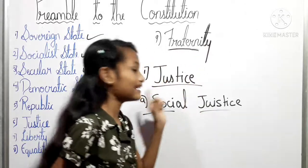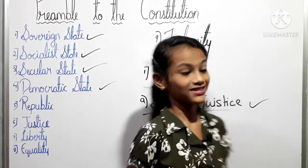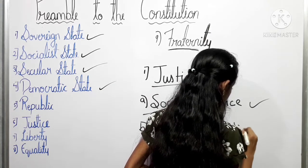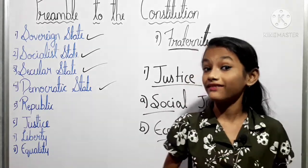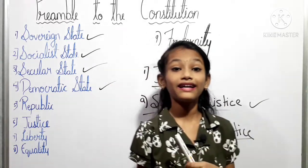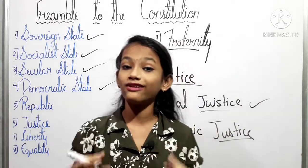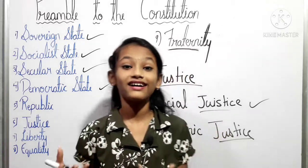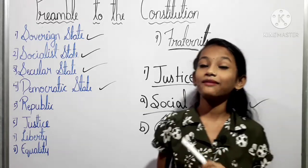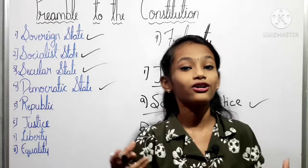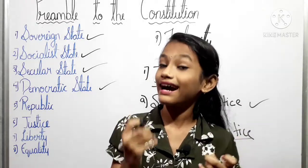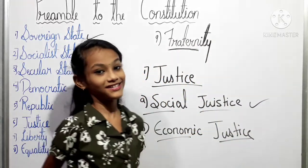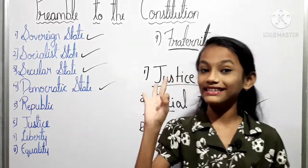Our second type is economic justice. Poverty leads to evil — hunger and even death. If poverty is to be eradicated, everybody has the right to a source of livelihood and to look after oneself and one's family. Our constitution gives this right without any discrimination. Our second point, economic justice, is completed.